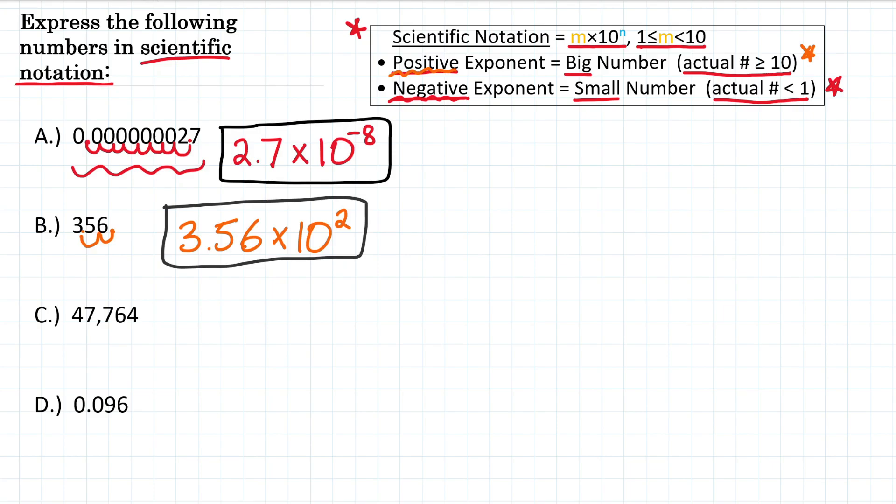Alright, on to C, 47,764. So here's our decimal right after the 4. We're going to move it 1, 2, 3, 4 places to the left. So that gives us 4.7764.